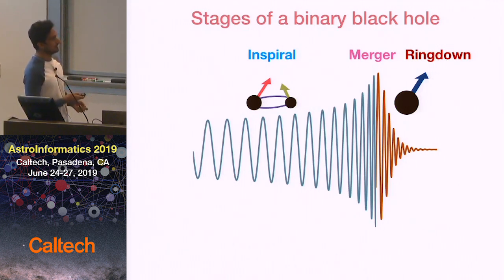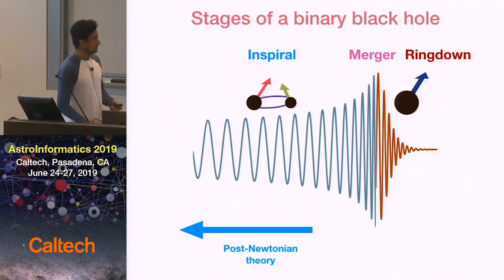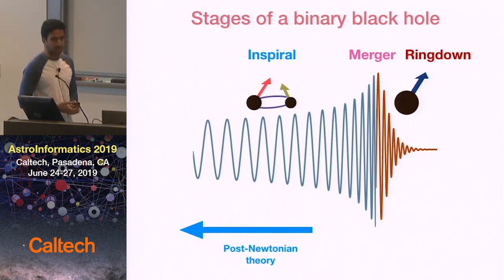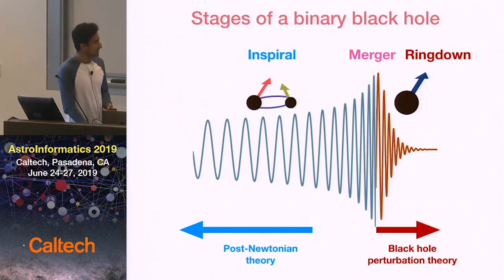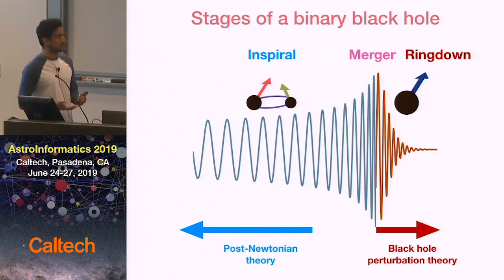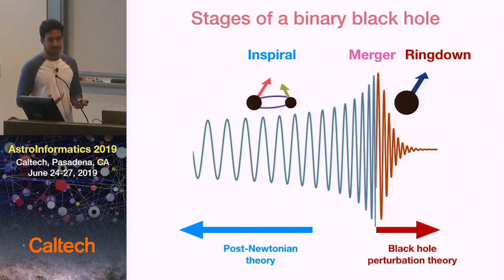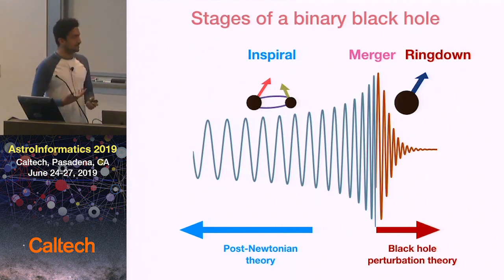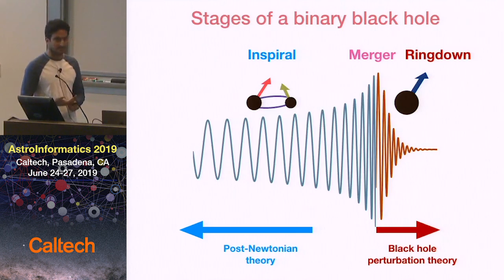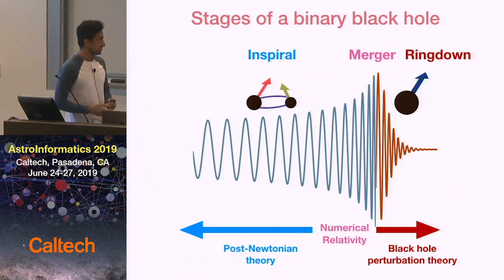So we want to model all three of these stages. To model the initial part, where the black holes are still far away from each other, we could use approximate analytical methods such as post-Newtonian theory. Similarly, at late times, we can use black hole perturbation theory to predict the gravitational wave signal. But as the black holes approach the merger, the spacetime is highly dynamical and the black holes are moving at about half the speed of light, so all of these analytical methods break down, and we have only one option, which is to solve Einstein's equations numerically — and that's where numerical relativity comes in.